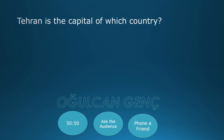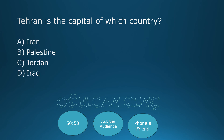Tehran is the capital of which country? Options: Iran, Palestine, Jordan, Iraq. Final answer: Iran, option A. Correct answer is Iran.